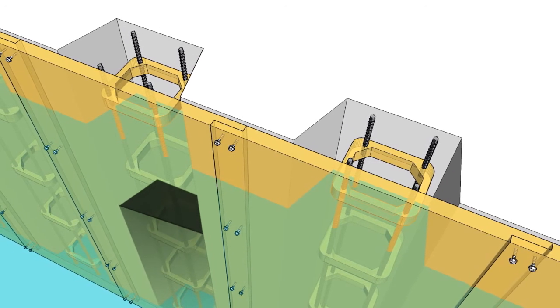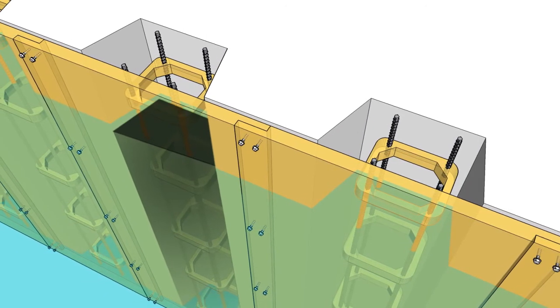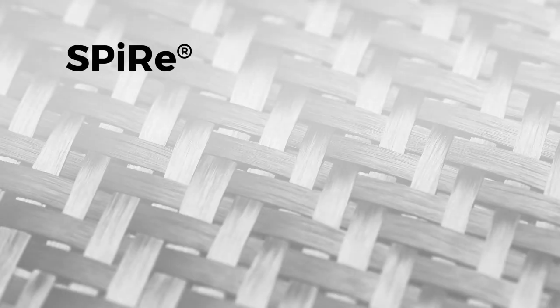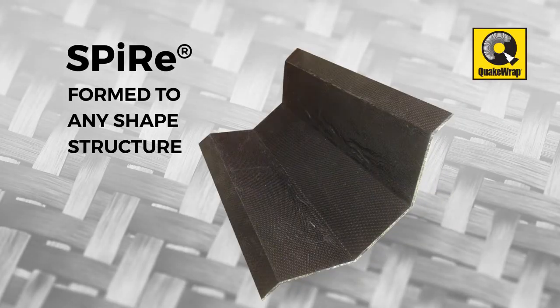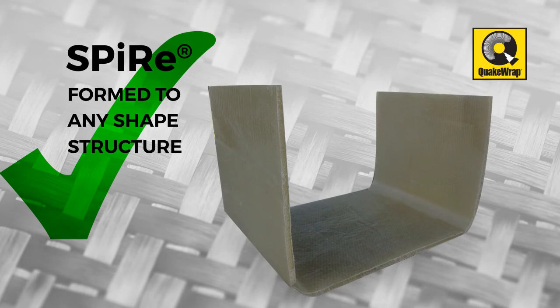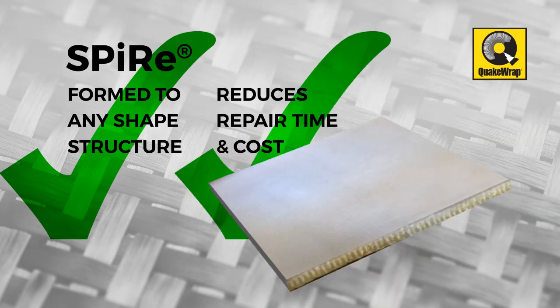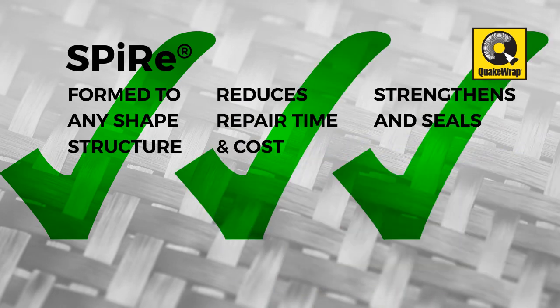This creates an unprecedented water protection and corrosion barrier for the original structure. The spire system, a patent-pending new system from QuakeWrap, can be formed to any shape structure, significantly reducing repair time while strengthening and sealing it from future corrosion and wear.